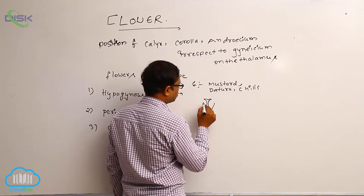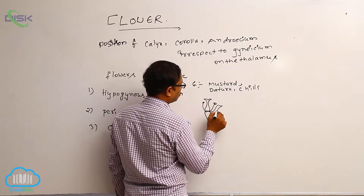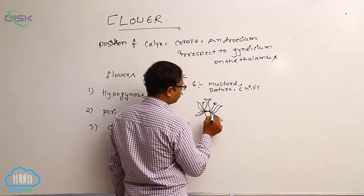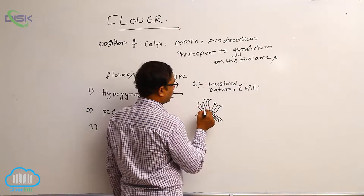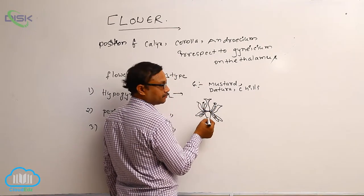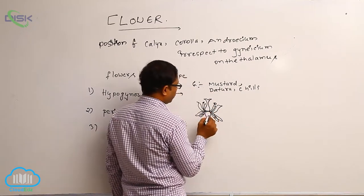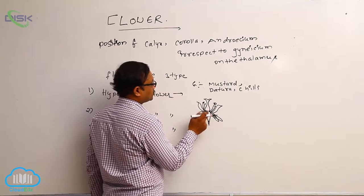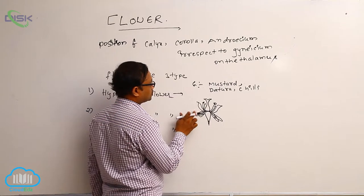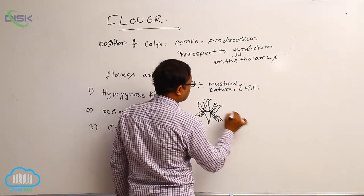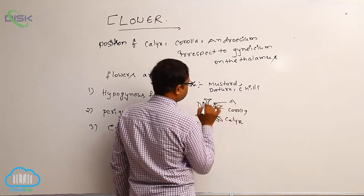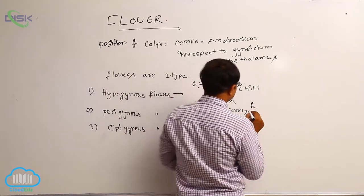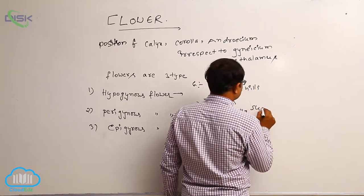So on the thalamus: Corolla, then Calyx. Calyx, Corolla, and Androecium are present below the Gynoecium, and Gynoecium is present at the highest position. This flower is known as hypogynous flower. In hypogynous flower, thalamus is cone-shaped, Gynoecium is at the highest position, and remaining floral parts — Calyx, Corolla and Androecium — are present below Gynoecium. This hypogynous flower is also known as superior ovary.